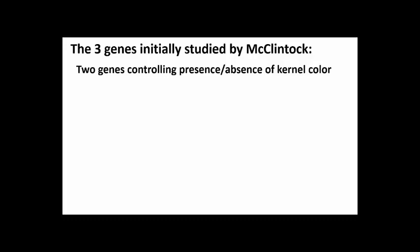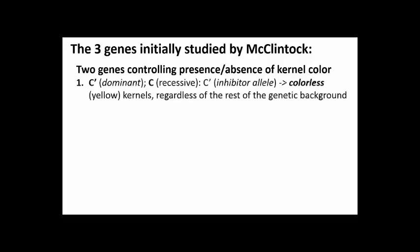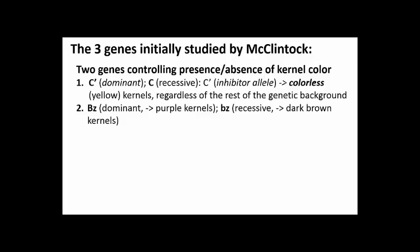McClintock initially looked at two genes involved in strains of maize that produced either colorless kernels or colored ones. The two genes were the C' and its recessive C allele. If present, a C' allele would lead to colorless kernels, and this was true no matter what the rest of the genetic background might be. Because the presence of a C' allele prevented pigmentation, it was called the inhibitor allele.